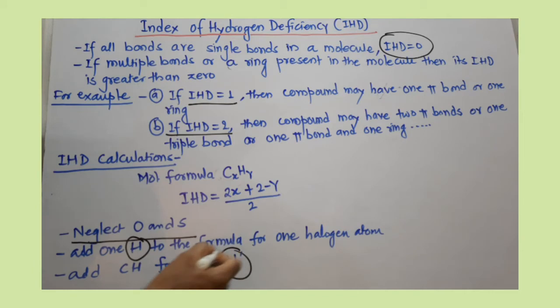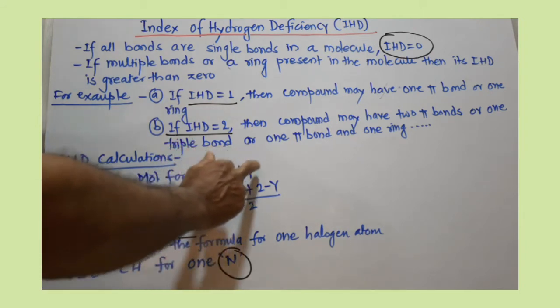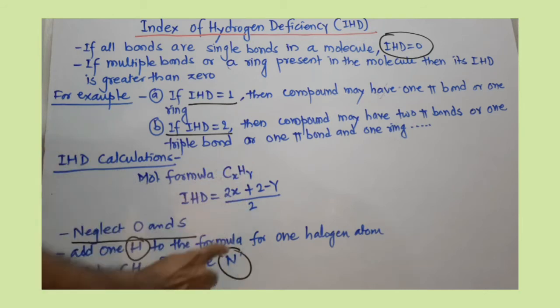If nitrogen heteroatom is present in the molecule, you replace nitrogen with one CH, which means one carbon and one hydrogen is added in the molecular formula before IHD calculation.